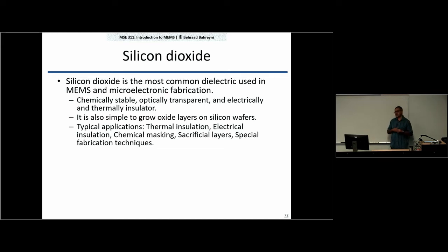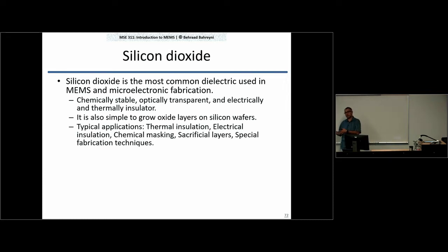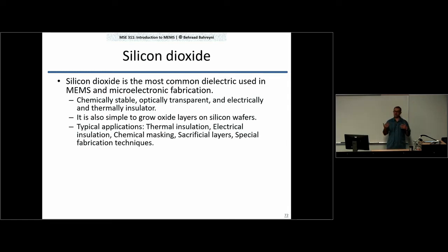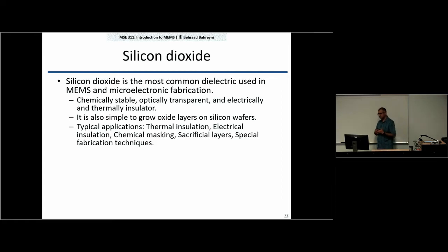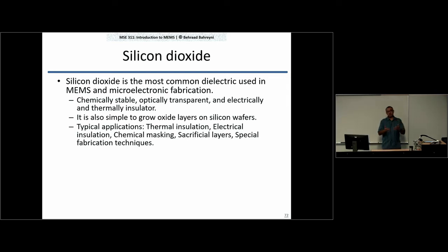We also use silicon dioxide as a sacrificial layer. Sacrificial materials in MEMS processing are those you need during the process but which are entirely removed by the end. At some point in the process you may need a layer of silicon dioxide to create a gap between two layers, but by the end of the process you remove that material entirely. The key requirement is process compatibility — whatever you use as a sacrificial layer should not adversely affect the following processing steps.